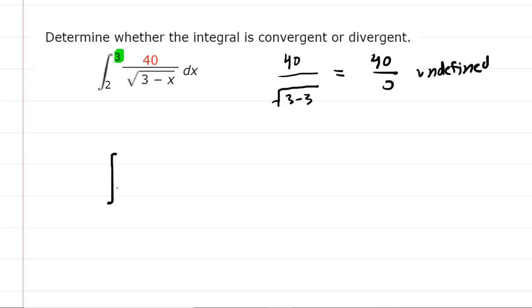And all we need to do is replace the 3 with a variable. We typically use the variable t, and this will work so long as we take the limit as t approaches 3. Now a little more specifically, if you consider the bounds here, we're integrating from a lower bound of 2 to an upper bound of 3, and it was the 3 that was problematic.